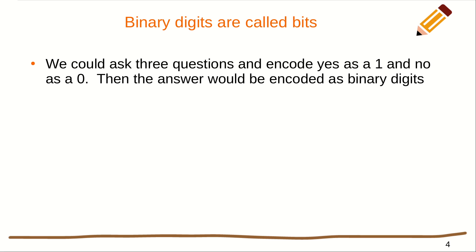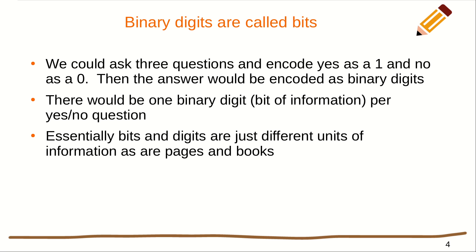You could ask three questions and encode yes as a 1 and no as a 0. Then the answer would be encoded as binary digits. In other words, if you think about the last problem we just did, and the answers were yes, yes, yes, then the answer would be 1, 1, 1, which, by the way, is binary representation of the number 7. So, there's one binary digit or bit of information per yes, no question. And essentially, bits and digits are just different units of information, just like pages and books. And that's because of this logarithmic identity. Log base 2 of x would give you the number of binary digits for x possibilities. And it's equal to log base 10 of x divided by log base 10 of 2. And the log base 10 of x is the number of digits you'd need for x possibilities. And log base 10 of 2, 1 over that, is the conversion factor between one and the other, digits and bits.